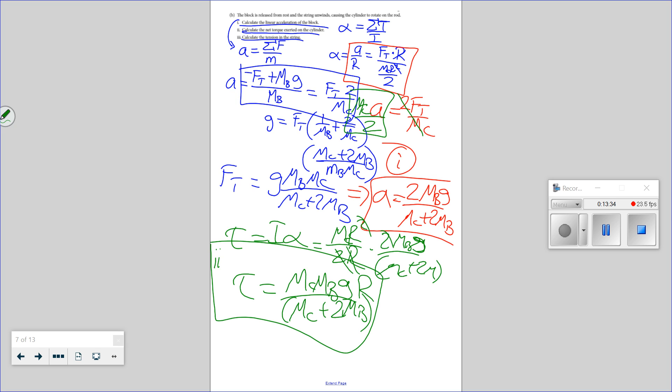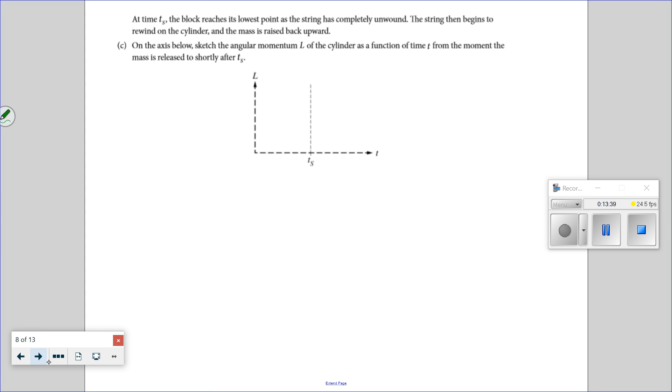Let's see how many points I really get. The block has reached its lowest point and begins to rewind on the cylinder, and the mass is raised back up. Sketch the angular momentum of the cylinder as a function of time from the moment the mass is released to shortly after. So when the mass is released, the angular momentum is going to be zero, and then it's going to increase to a maximum. I think it's going to linearly increase. That's it.